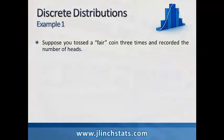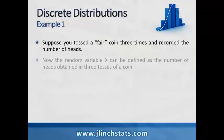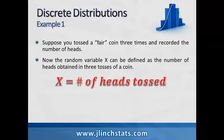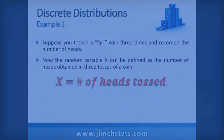Now let's take a look at our first example. Suppose you toss a fair coin three times and record the number of heads. The random variable x can be defined as the number of heads obtained in three tosses of a coin.